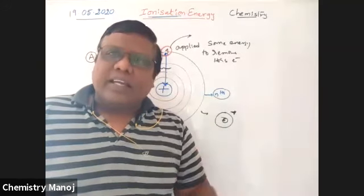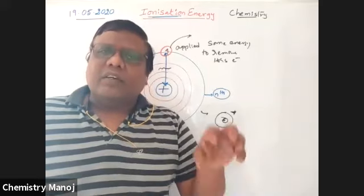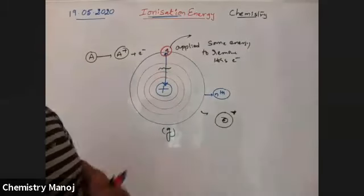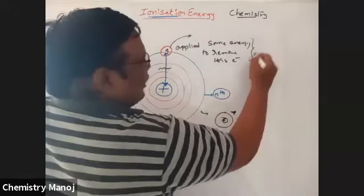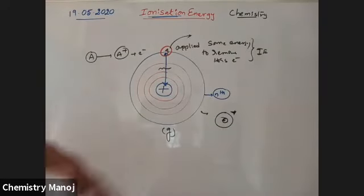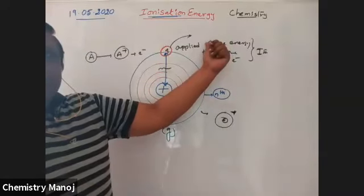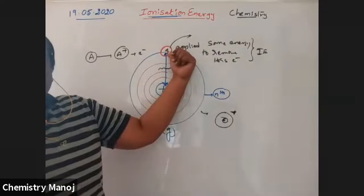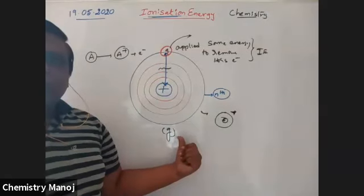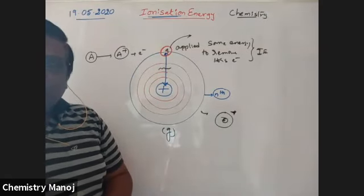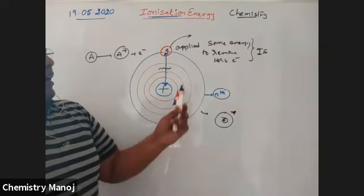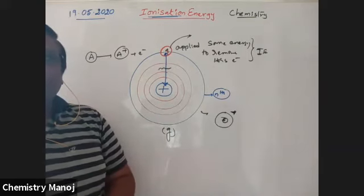Losing or gaining of electrons of an atom is always in its gaseous state. The minimum energy required to remove an electron from the outermost orbit of a gaseous neutral atom is called ionization energy.